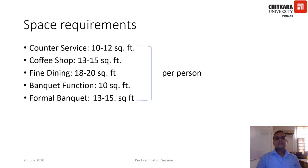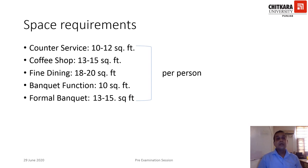The next slide covers international space requirements, which are very important when doing the layout of a restaurant. Different space requirements apply to different types of restaurants: for counter-style service, 10–12 square feet per person is needed; for a coffee shop, 13–15 square feet per person; for fine dining, 18–20 square feet per person; for an informal banquet function, 10 square feet per person; and for a formal or state banquet, 13–15 square feet per person.